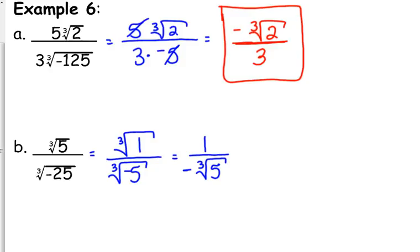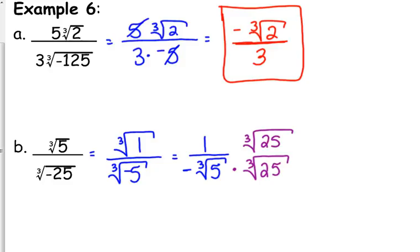We are not going to multiply top and bottom by the cube root of five because it doesn't work as nicely as with square roots. The reason square roots work is because the square root of five times the square root of five is the square root of twenty-five, which is five. If we just multiply by the cube root of five here, we get the cube root of twenty-five, which is not a perfect cube. When rationalizing cube roots, we need to multiply by the cube root of a number that will turn five into a perfect cube. The smallest perfect cube we can turn five into is one hundred twenty-five, so we need to multiply by twenty-five.